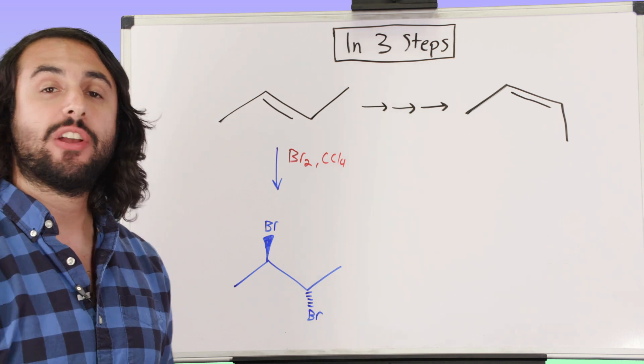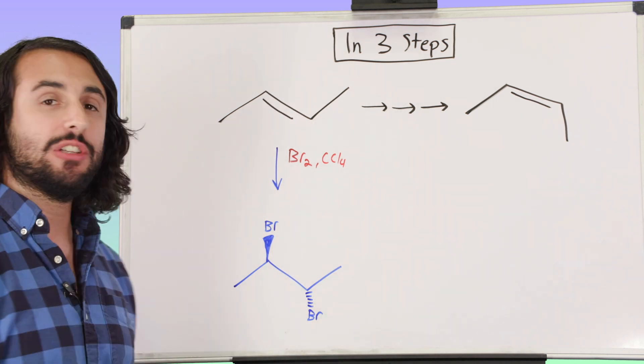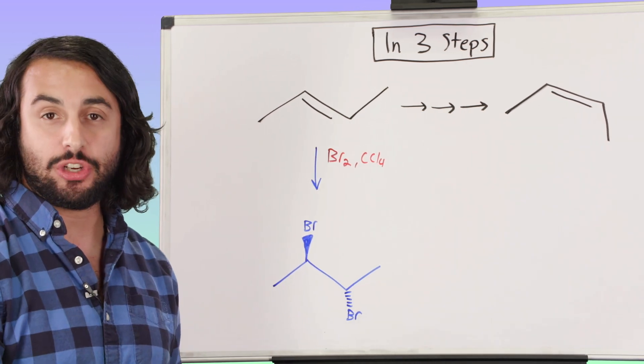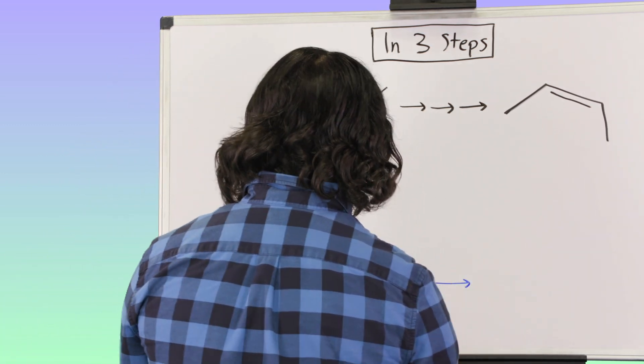Because we know another technique whereby we can get from this kind of molecule to the alkyne by doing two successive eliminations. What method do we know that will help us do that?